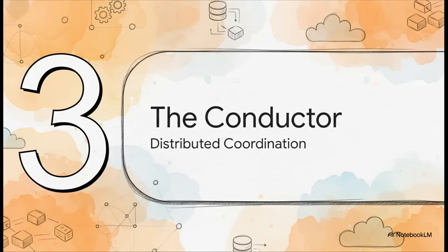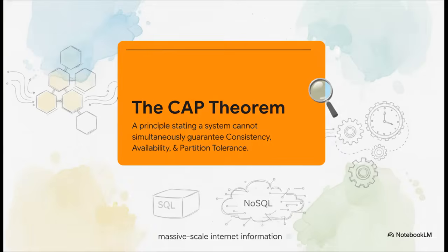Okay, so we've got our storage and our processing engine. But wait, how do you get thousands of different machines to agree on anything? Who's in charge? Who gets to write what and when? This is where the conductor comes in—the layer that brings order to the potential chaos of a massive distributed system. To really get what's going on here, you have to understand a fundamental law of the universe for these systems: the CAP theorem. Seriously, it's like a law of physics for distributed computing.